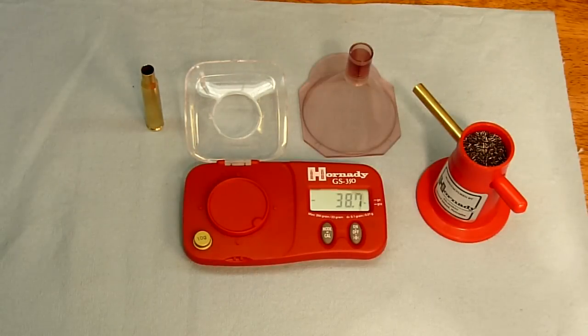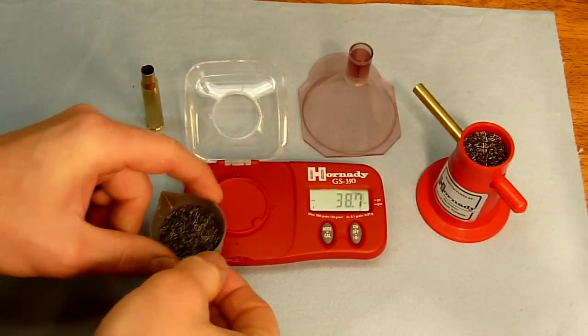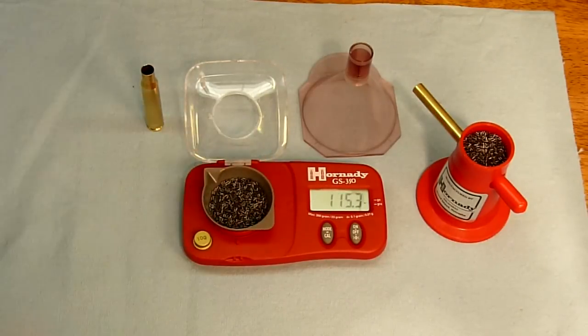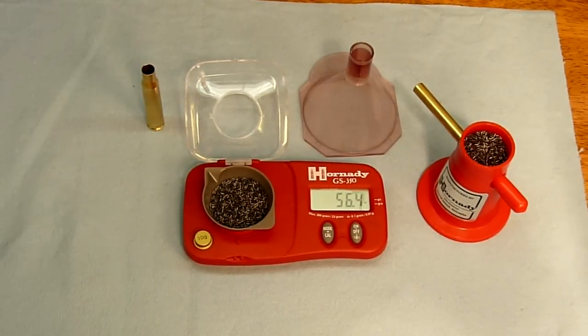And what we're going to do is dispense a load of powder into the tray. We'll then put the tray on the scale and see where we're at with our charge. So 56.4.